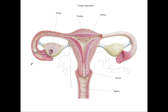So those are the ovarian ligaments. The suspensory ligament of the ovary goes out to the lateral abdominal wall. This is the ovarian ligament here. And we have the broad ligament, which goes all the way around. It's important not to mistake the ovarian ligament and the suspensory ligament of the ovary.